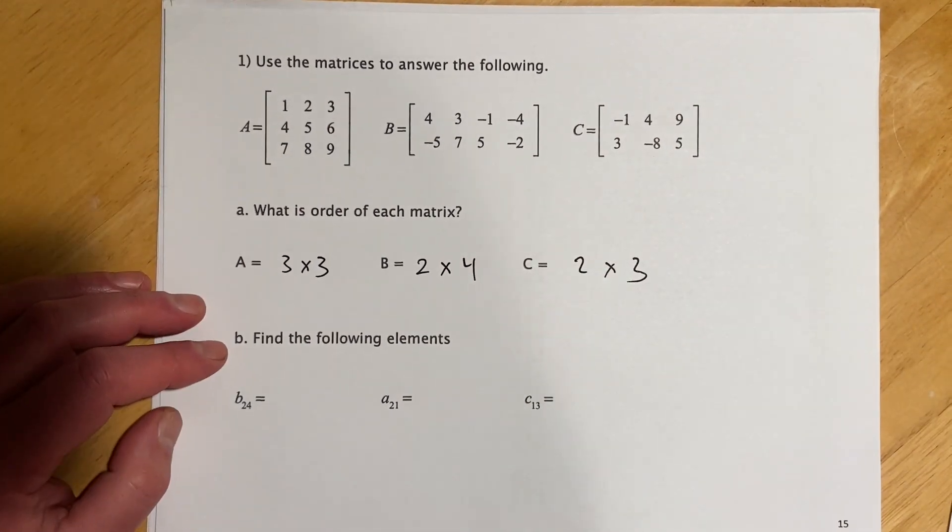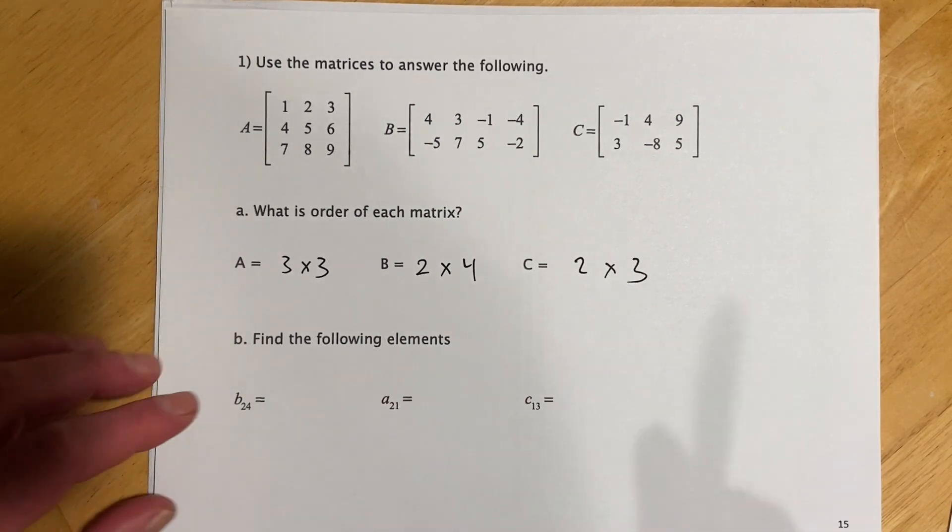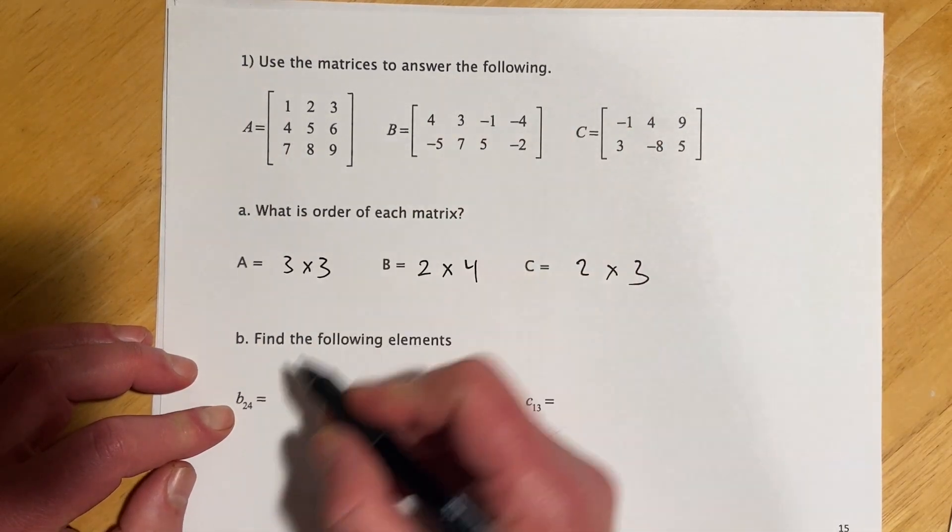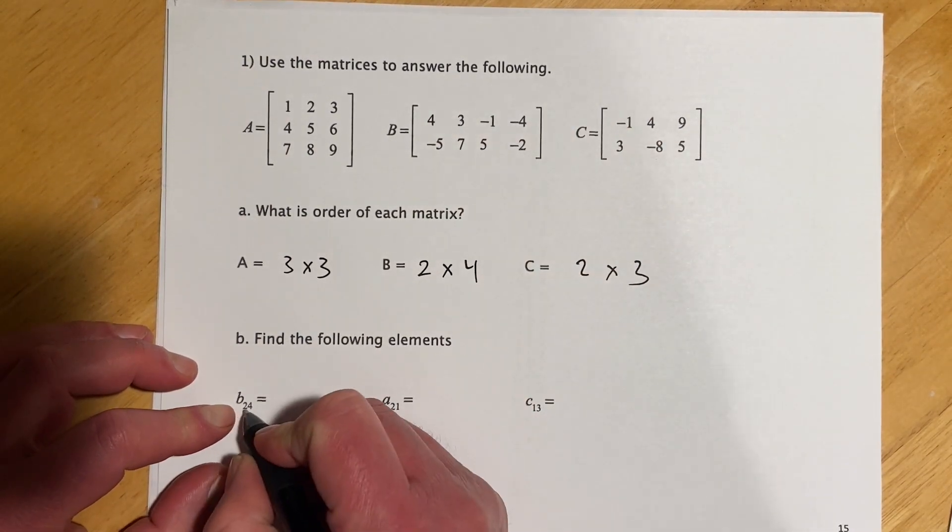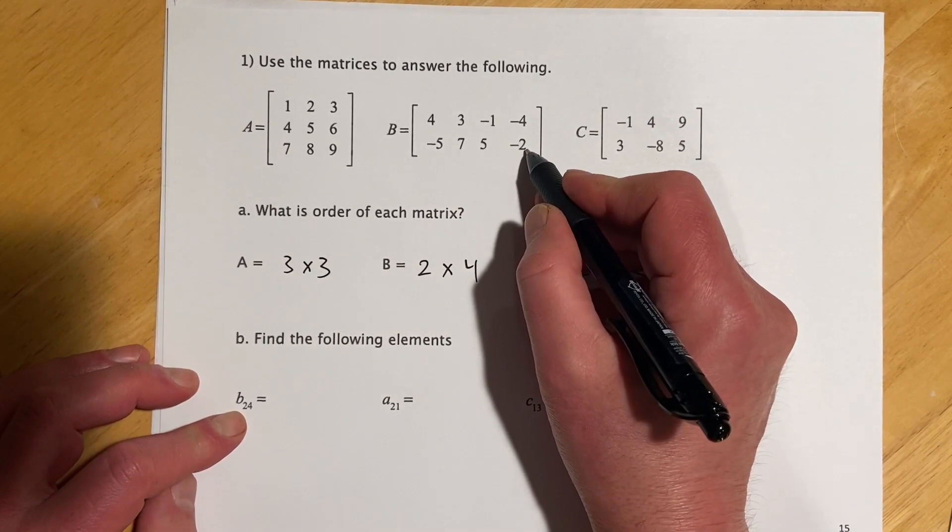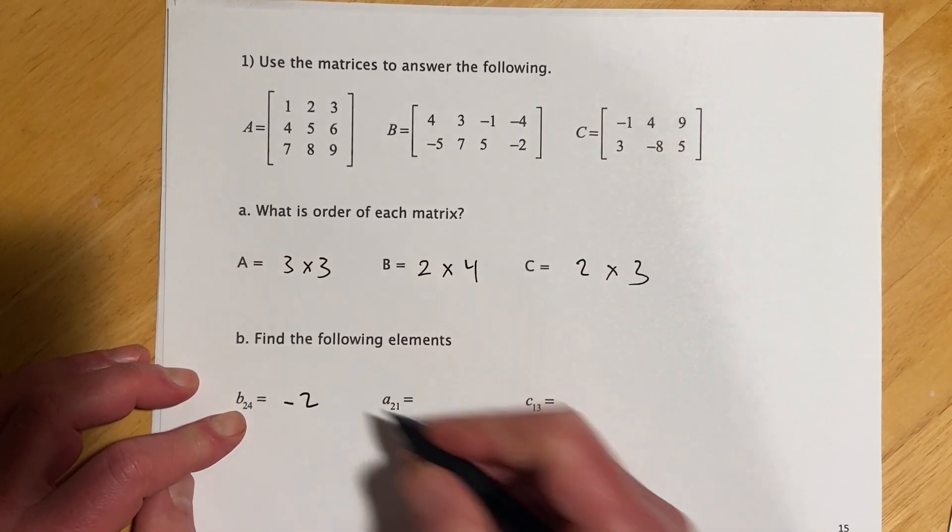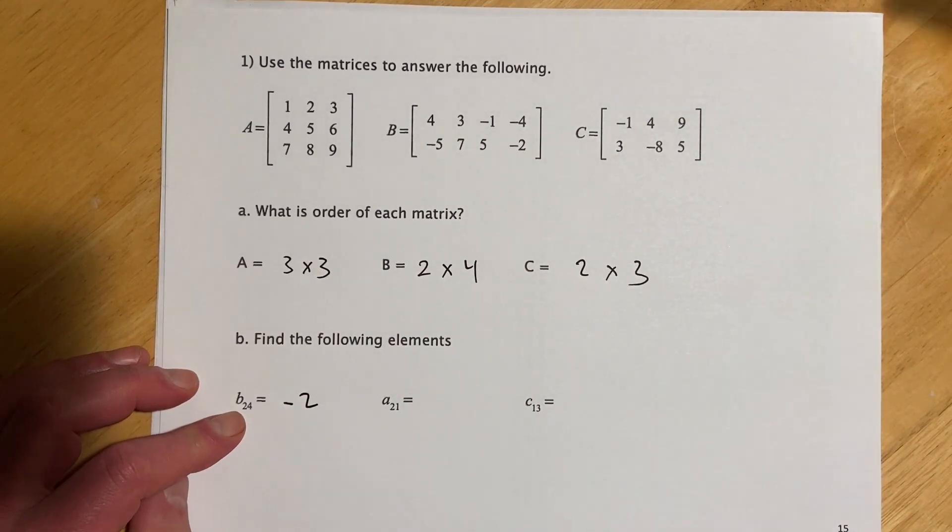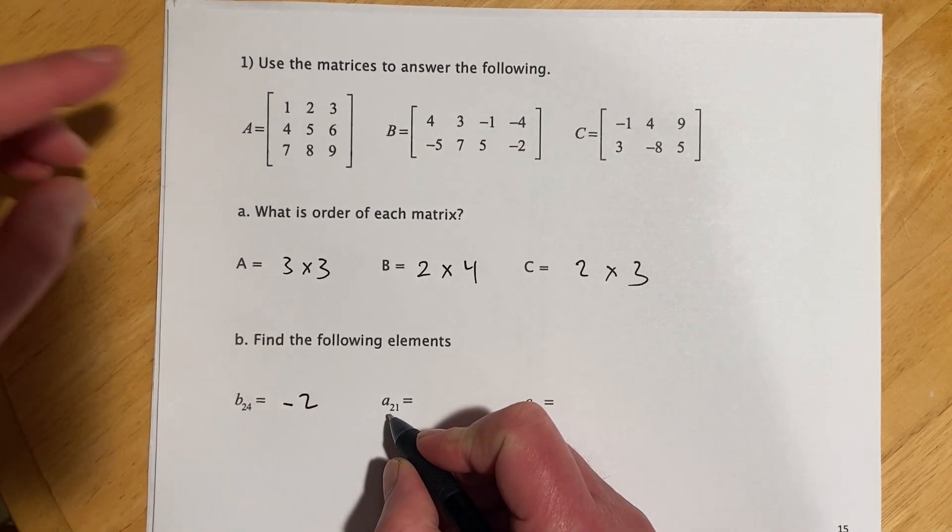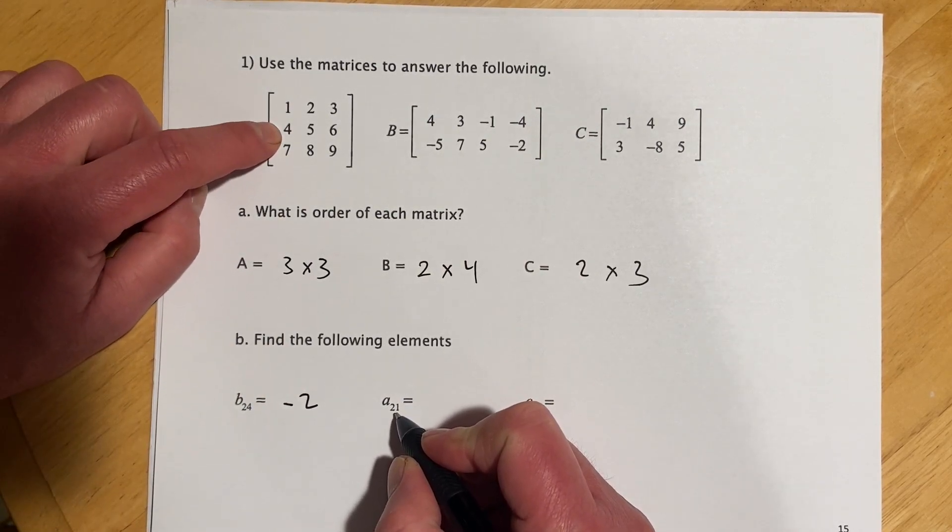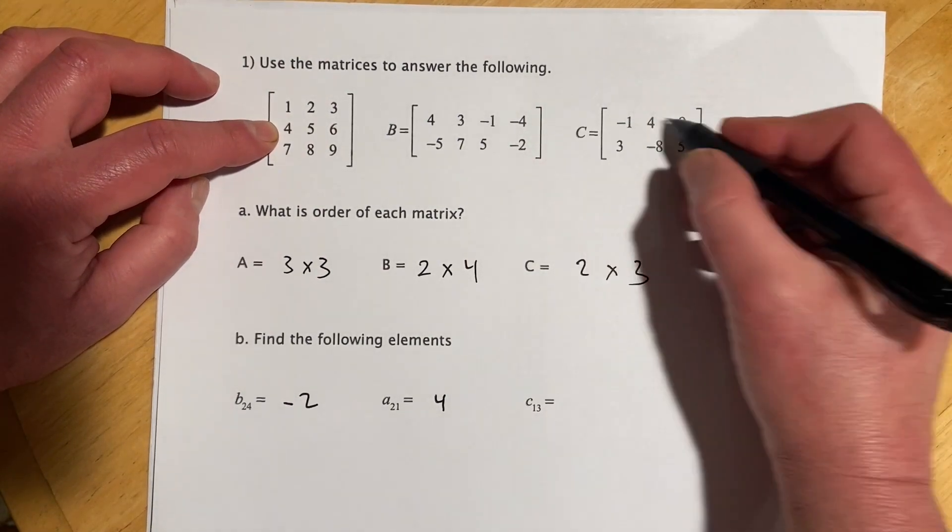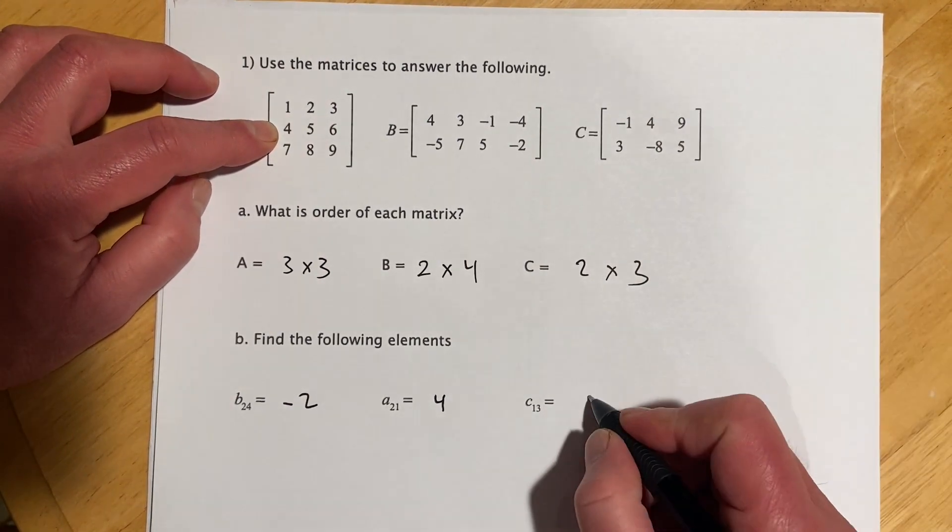And then B is asking us to find the following elements. So when they use a lowercase b like that, that means it's an element in the matrix B. And again, this goes rows by columns. So we're looking in the second row in the fourth column. And so for this, this would be a negative two. For this next one, we have a, and then we're looking in the second row and the first column. So that should be four. And for C, we're looking in the first row, third column. So that should be that nine.